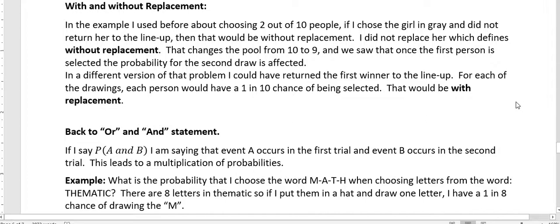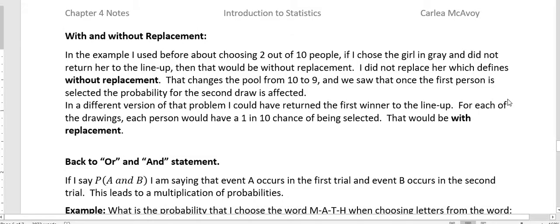In the example I used before about choosing 2 out of 10 people, if I chose the girl in gray and did not return her to the lineup, then that would be without replacement. I did not replace her, which defines without replacement. That changes the pool from 10 to 9 and then we saw that once the first person is selected, the probability for the second draw is affected.